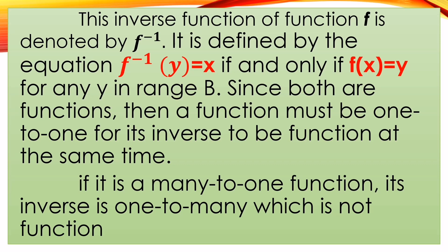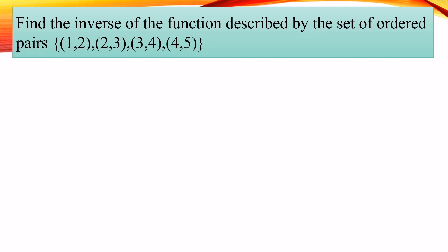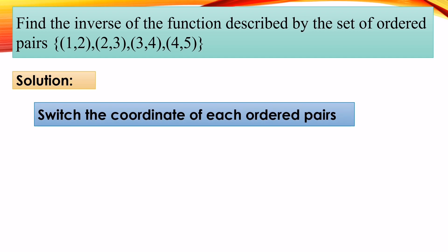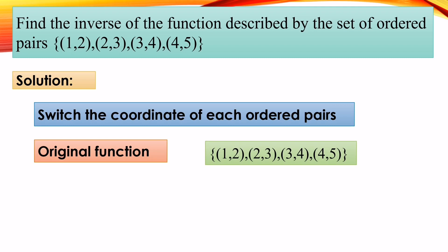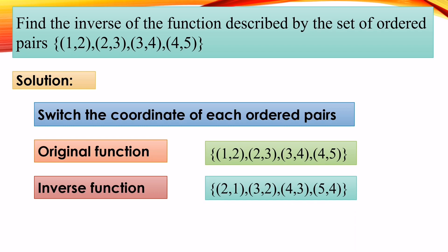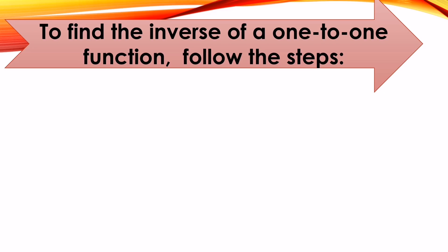So inverse function is only applicable when it is one-to-one. Let us have an example: find the inverse of the function described by the set of ordered pairs {(1,2), (2,3), (3,4), (4,5)}. We need to switch the coordinates of each ordered pair. So the original function is {(1,2), (2,3), (3,4), (4,5)}. When we find the inverse, we just swap them: (2,1), (3,2), (4,3), (5,4). The original x-values become y-values and the original y-values become x-values in the inverse function.